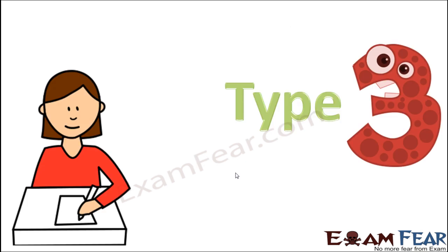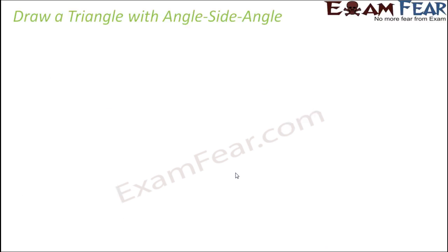Let us now move on to type 3. So in type 3, this is going to be even more interesting. Here you will be given the length of only one side, but you will know two angles. So even with two angles and one side, we can easily draw a triangle. Let's see how.